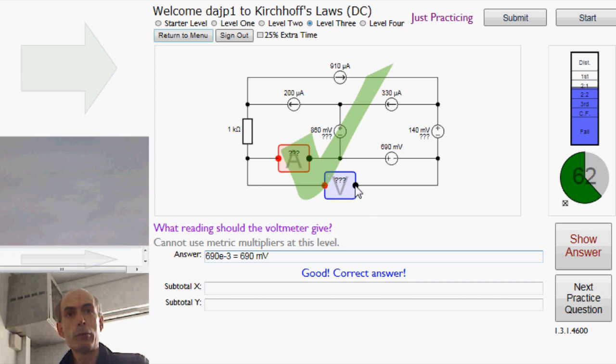That means I can go from the negative terminal of the voltmeter here, along here, up by 690 millivolts. And then the voltage there is the same as the voltage there. So I can just carry on, and carry on, and arrive at the positive terminal of the voltmeter.